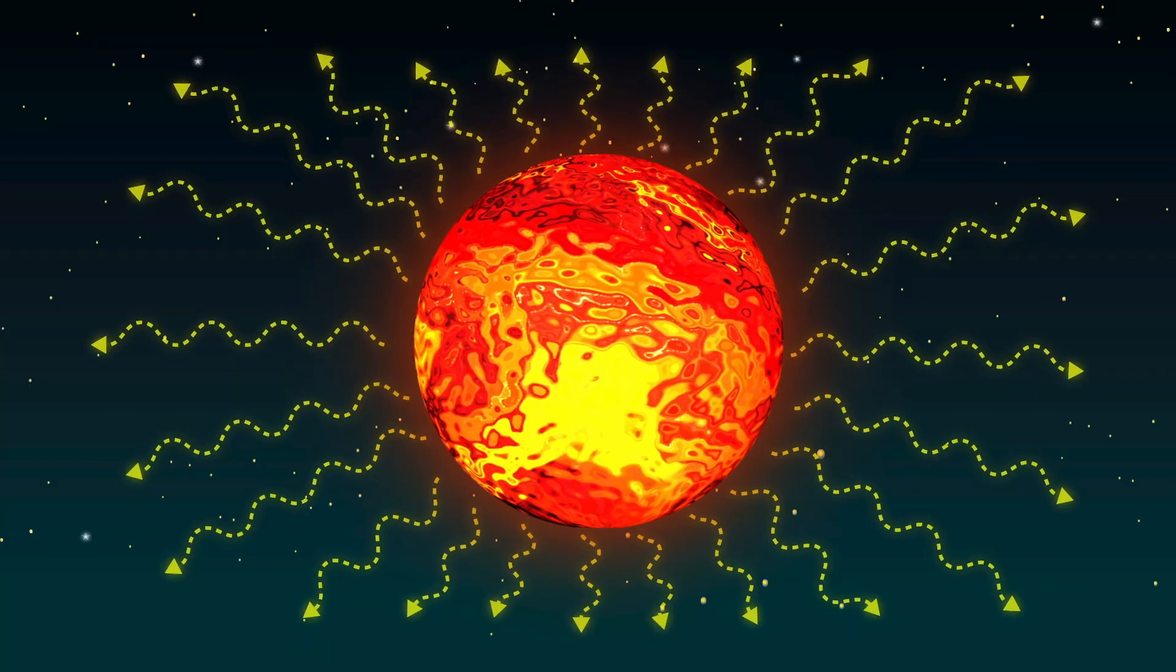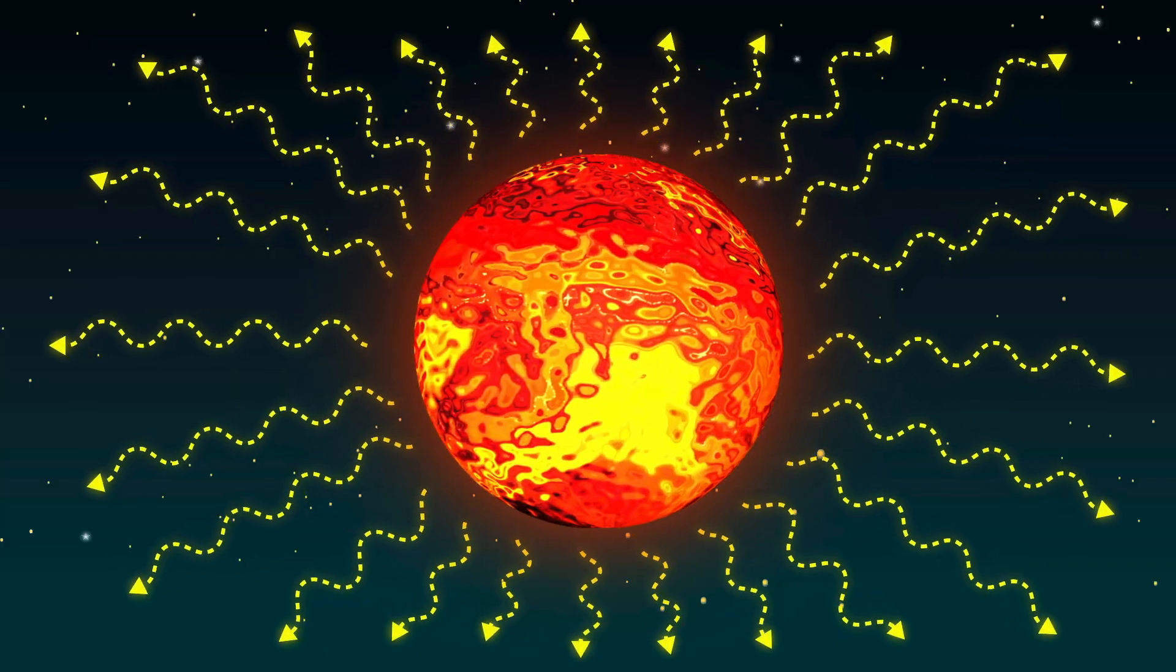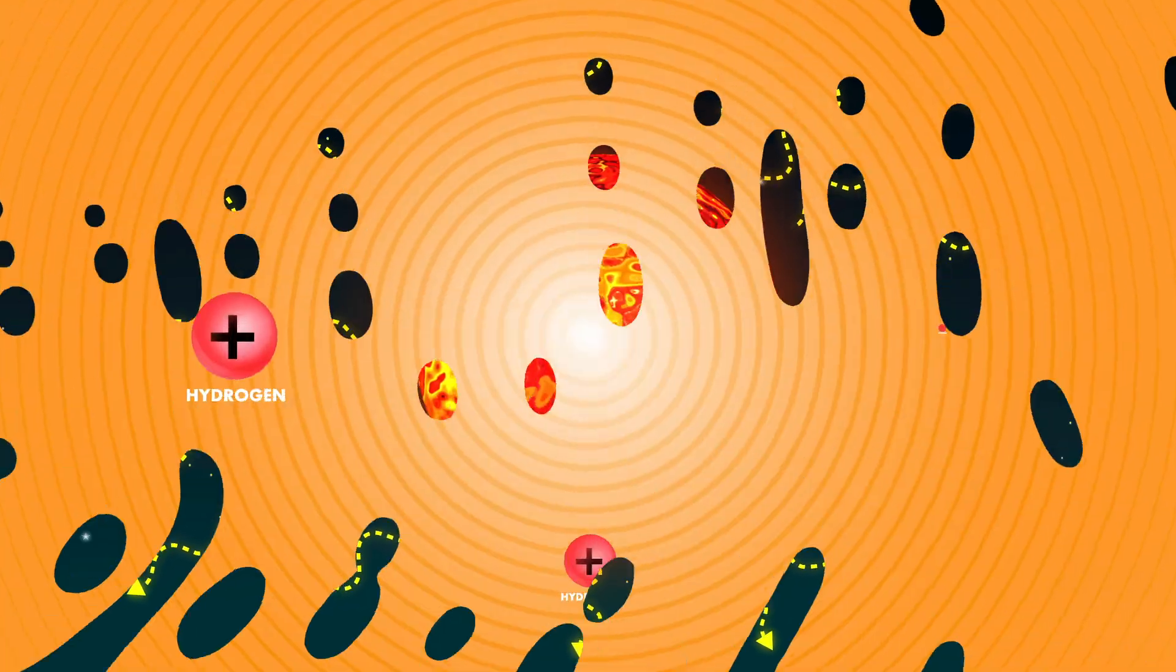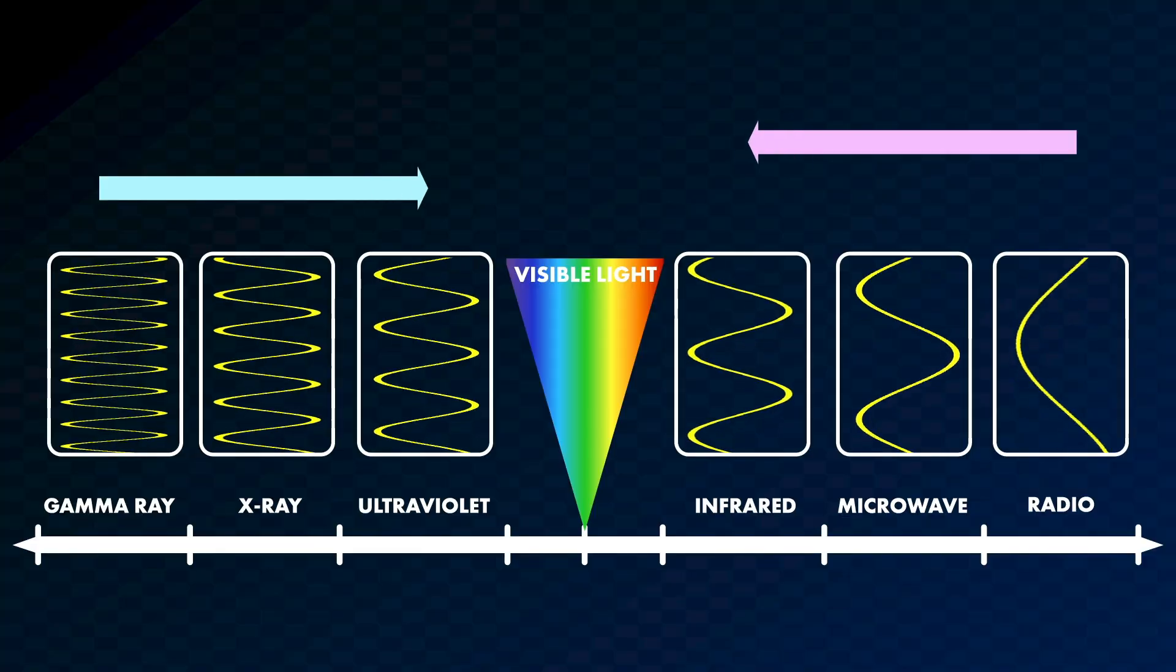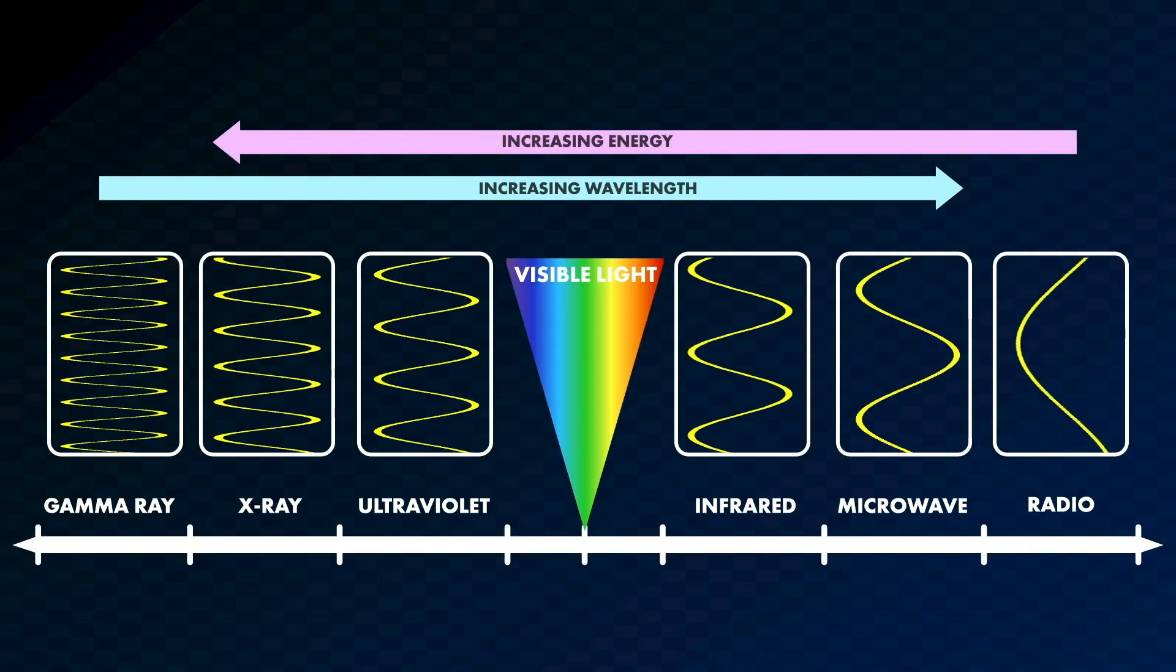Like all main-sequence stars, the sun produces energy through a process called nuclear fusion. This reaction occurs when four hydrogen nuclei combine through several steps to form one helium nucleus. Nuclear fusion also releases a tremendous amount of energy that comes in a range of electromagnetic wavelengths.